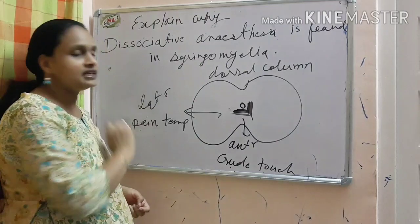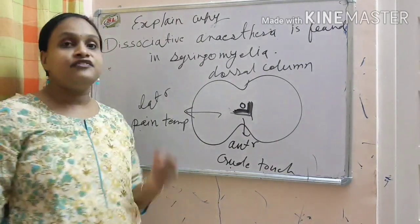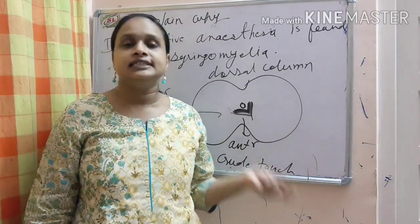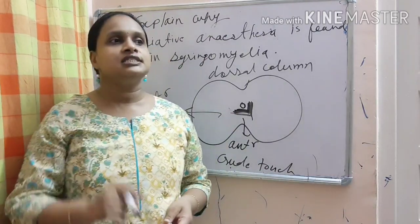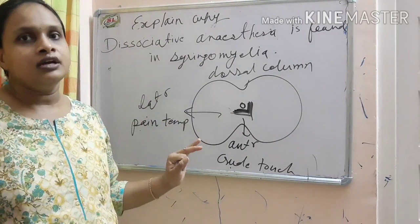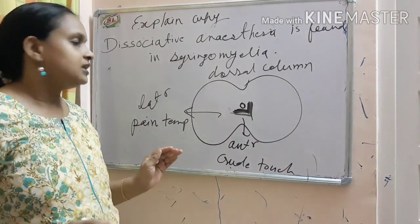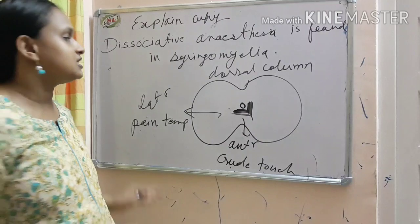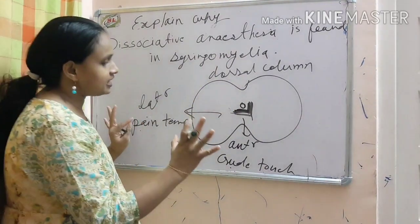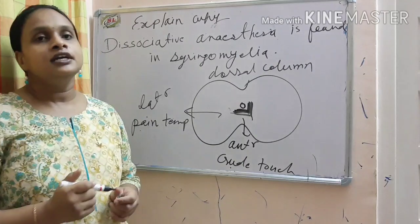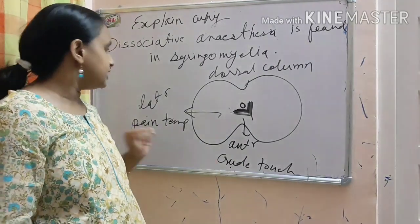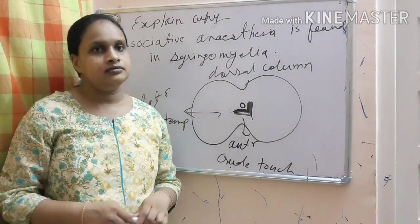Crude touch has gone, pain has gone, temperature has gone. But fine touch is there, two point discrimination is there, tactile localization is there, stereognosis is there. So, this condition is known as dissociative anesthesia means there is dissociation in anesthesia. Some modalities are there and some modalities have gone. This is known as dissociative anesthesia. Pain is not there but touch is there.